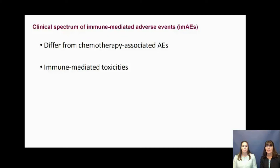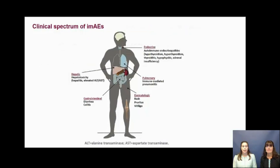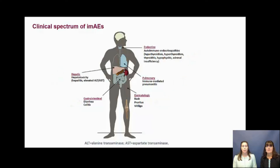The adverse events seen with checkpoint inhibitors differ from those seen with typical chemotherapeutic agents. The unique mechanism of action of these immunotherapy agents involves deregulation of the immune system, which results in immune-mediated toxicities that can mimic a broad range of autoimmune conditions and can be serious. IMAEs can impact any part of the body, but most commonly involve the gut, skin, endocrine glands, liver, and lungs. IMAEs have been observed in up to 90% of patients treated with checkpoint inhibitors in clinical trials.